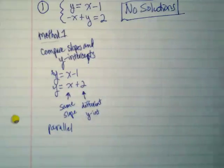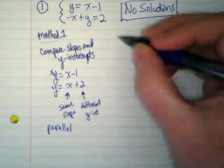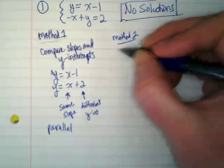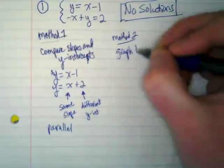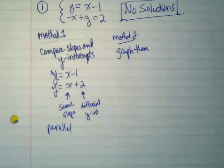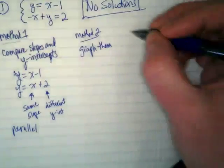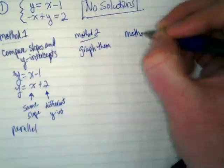So these kinds of special systems are no solutions. Now, according to our book, method two is to graph them. And if we graph these, we would see that they're parallel. I will be honest with you, I rarely ever use method one or two when I'm solving these because I don't know when I'm starting that I have a no solution until I've worked with it already.